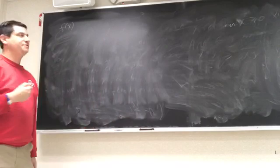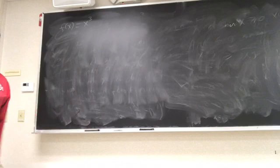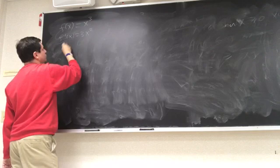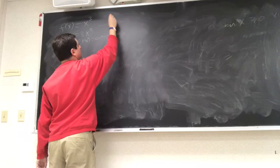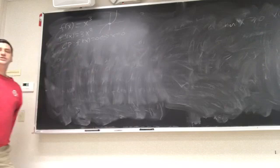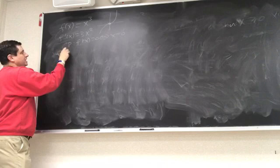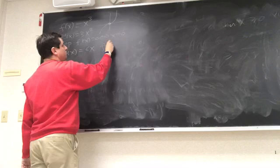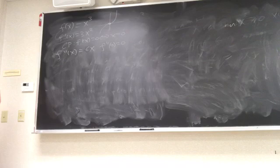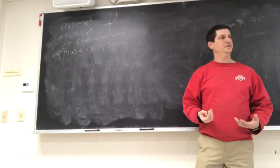The standard example is f of x equals x cubed. Then f prime of x is 3x squared, so the critical point is at x equals zero. If we plot this function, we see it does not have a maximum or minimum at x equals zero. The second derivative is 6x, and it also vanishes at zero — f double prime of zero equals zero. So the first derivative being zero is a necessary condition for a maximum or minimum, but it is not a sufficient condition.